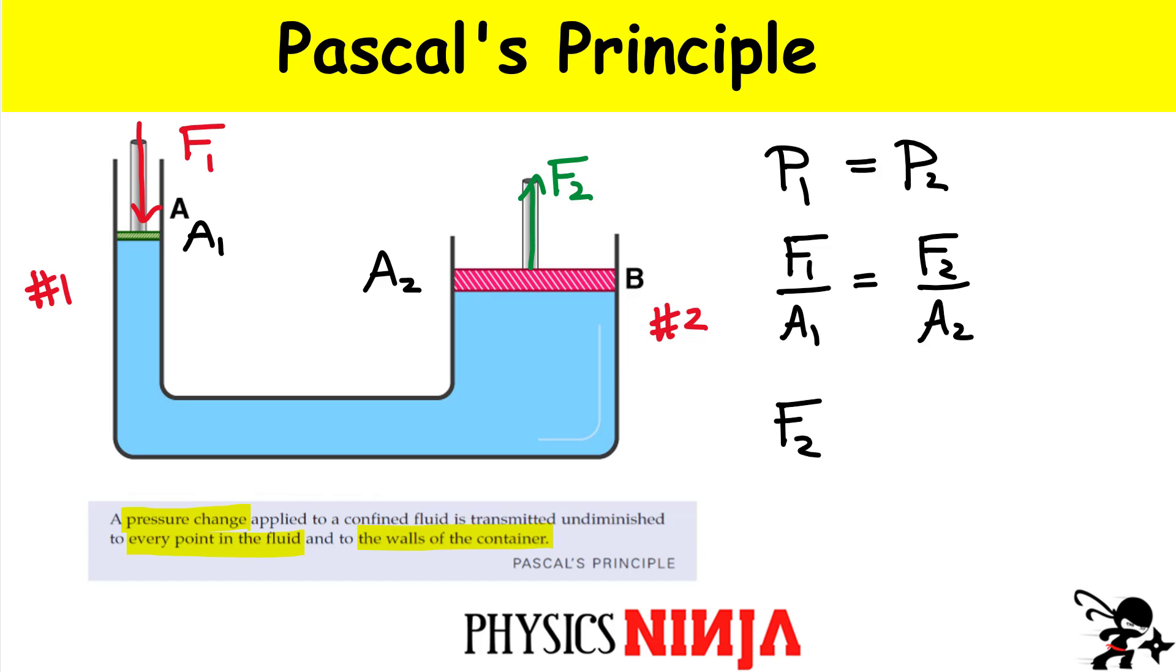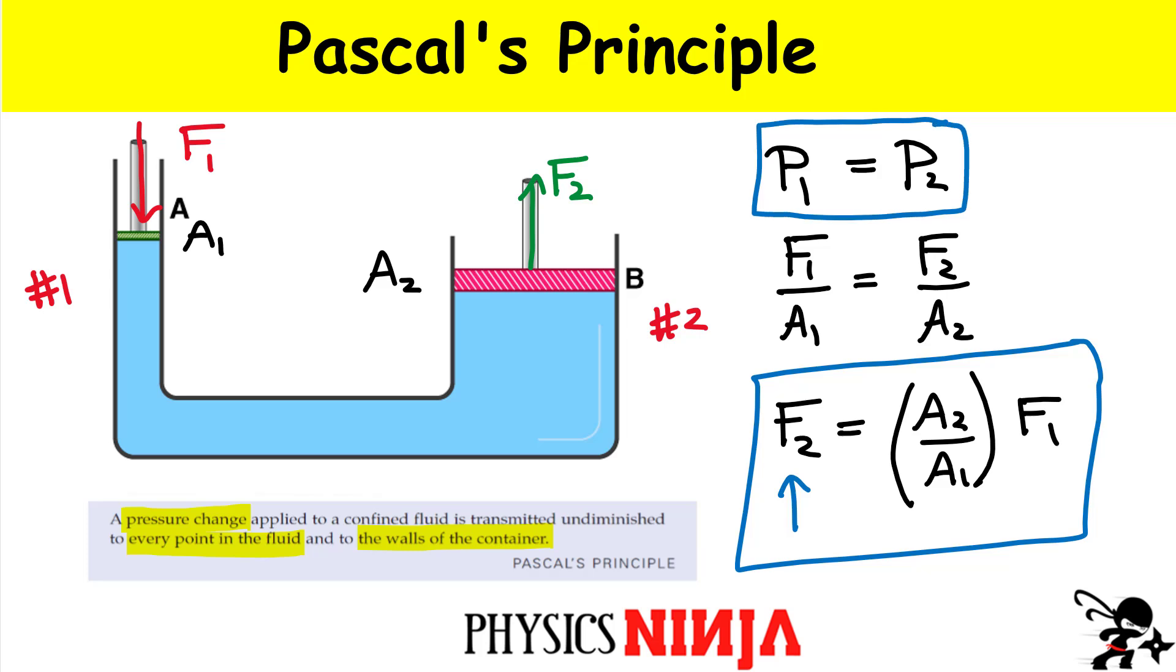The key to Pascal's principle and to understand hydraulic systems is to rewrite this equation. F2 is my output force. If I bring this area A2 on the other side, I'm going to open up a bracket here, A2 over A1, and I still have my original force that I'm applying here on the left-hand side. One thing you can see is that if we have a bigger area A2, you're going to end up doing over here is you're going to get a larger force. F2 is going to be bigger than F1 as long as this ratio is bigger than one. That is really the key to Pascal's principle.